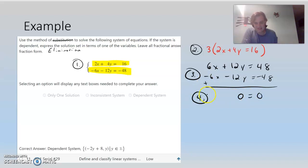But 0 equals 0, we said if the X and the Y are gone, and the two numbers are equal, it's dependent. Dependent. So, that means they're basically the same line. One is just a multiple of the other, but they're on top of each other. So it's a dependent system.